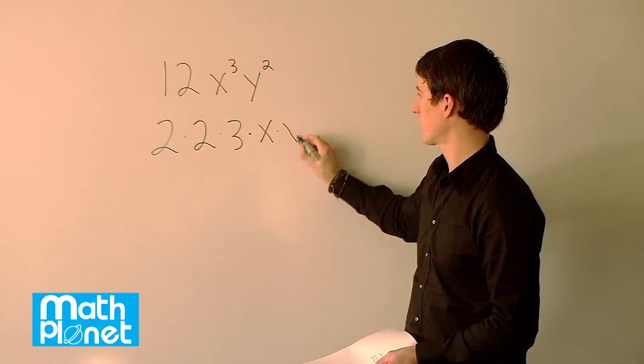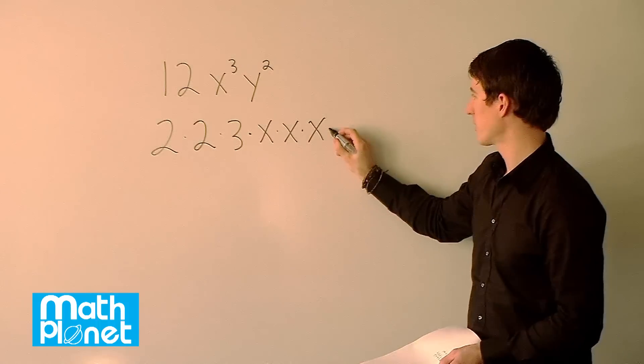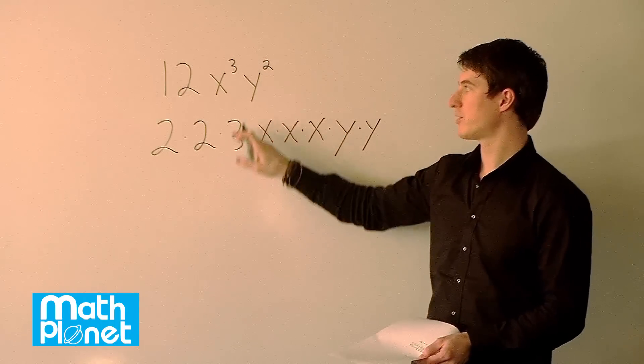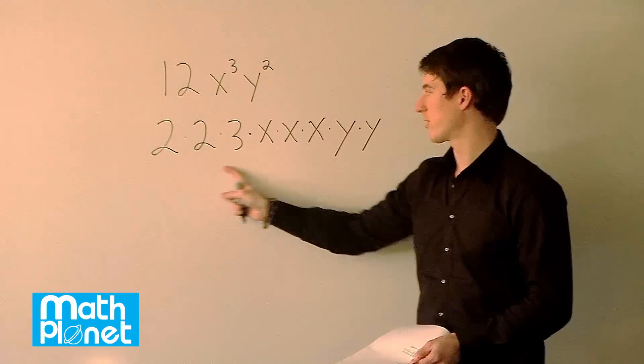It's going to say there are 3 x's. And now there are 2 y's. So it's all one term and these 2 terms are exactly equal. But this is expanded out as far as you can go.